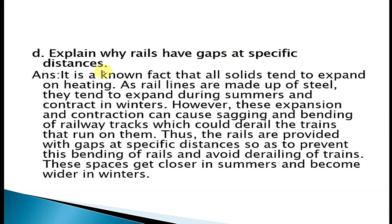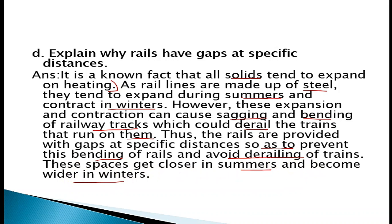Question 3D: Explain why rails have gaps at specific distances. All solids tend to expand on heating. Rail lines are made of steel, so they expand in summer and contract in winter. This expansion and contraction can cause sagging and bending of rail tracks, which could derail trains. Therefore, rails are provided with gaps at specific distances to prevent bending and avoid derailing. These spaces get closer in summer and become wider in winter, preventing rail accidents.